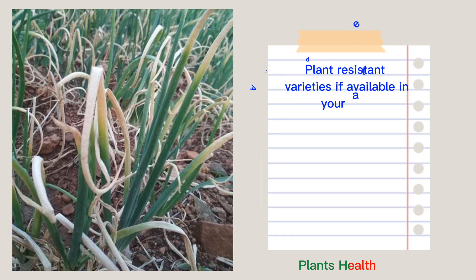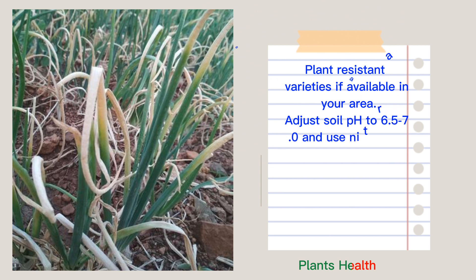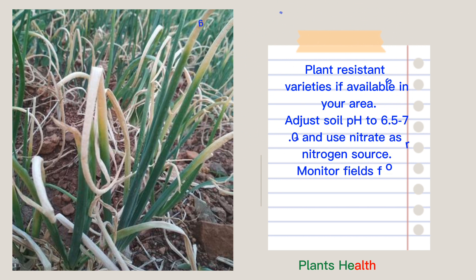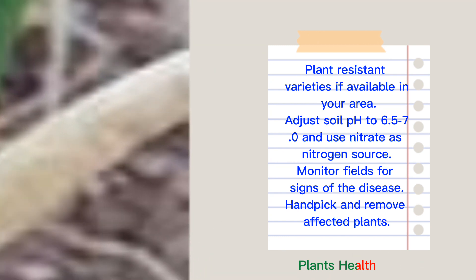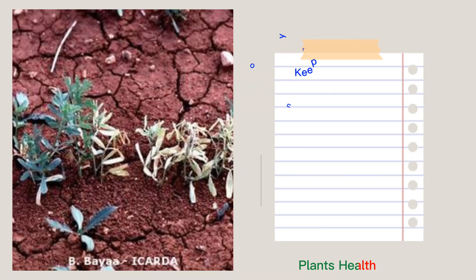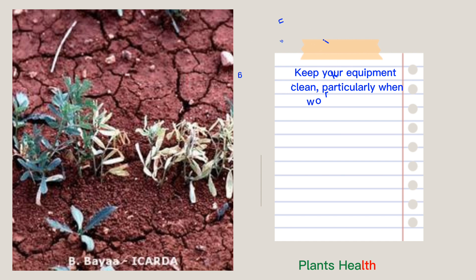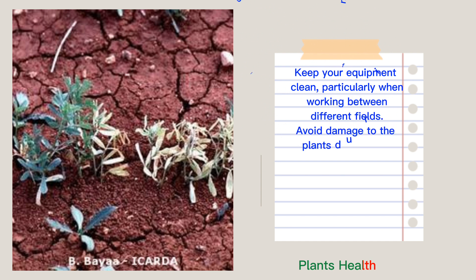Adjust soil pH to 6.5–7.0 and use nitrate as the nitrogen source. Monitor fields for signs of the disease. Handpick and remove affected plants. Keep your equipment clean, particularly when working between different fields. Avoid damage to plants during field work.